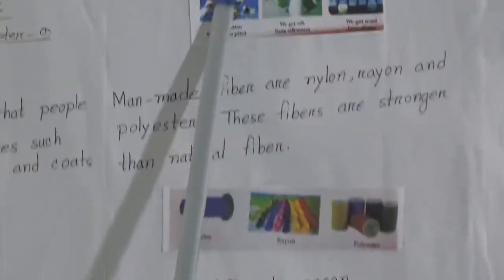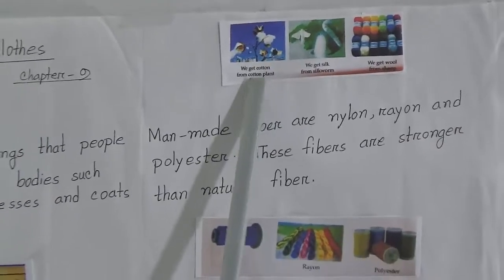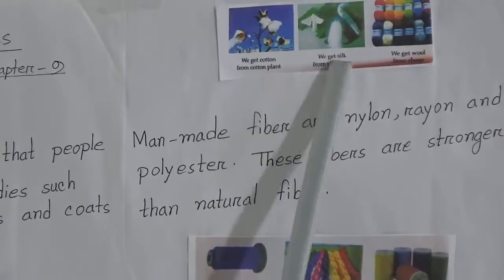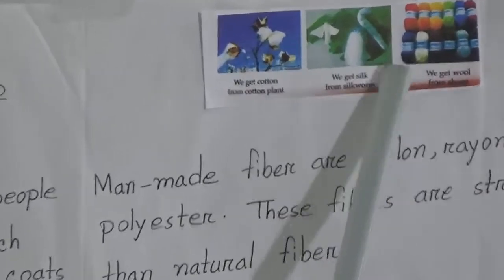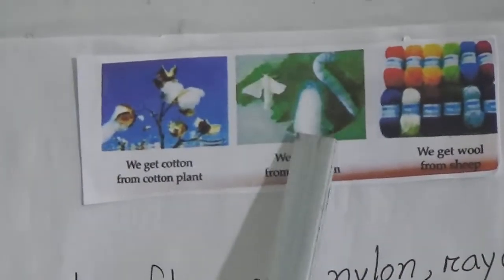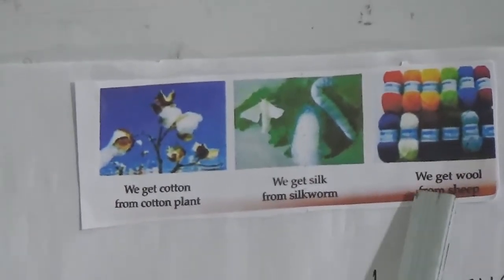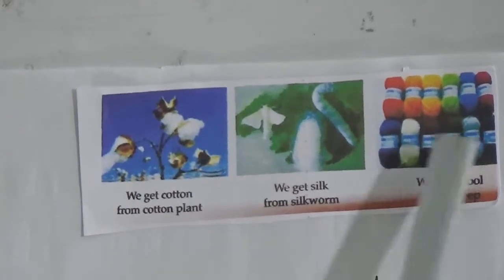You can see this picture — here is a cotton plant. We get cotton from the cotton plant. We get silk from the silkworm — you can see here is a silkworm. And we get wool from sheep.